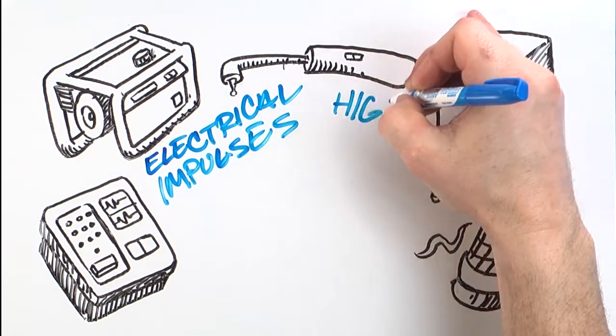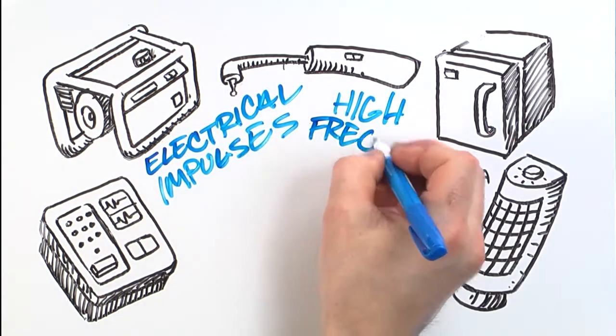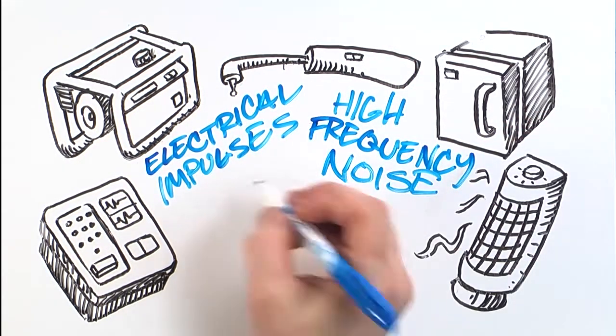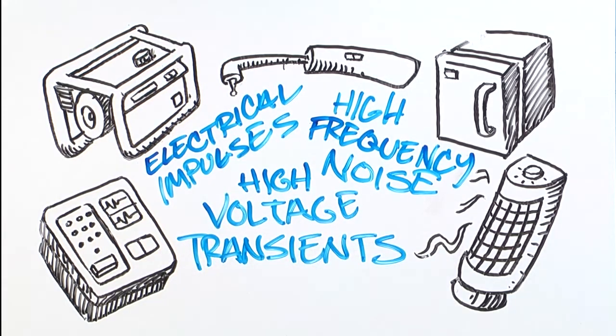These result in electrical impulses, high frequency noise, and high voltage transients, all of which affect the operation of your system.